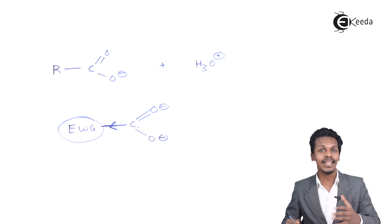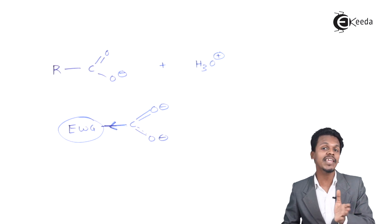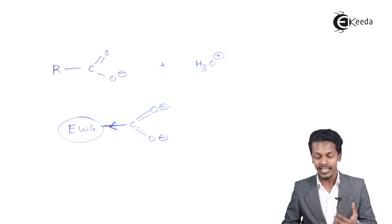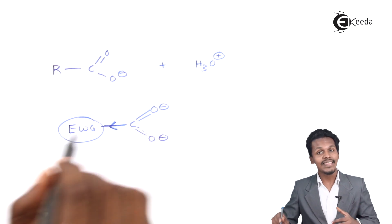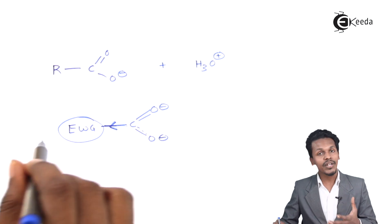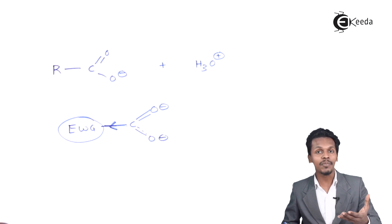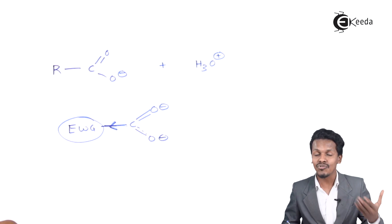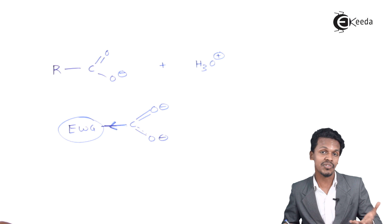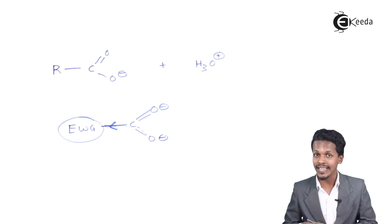By stabilizing the carboxylate ion, the electron withdrawing group helps in removing the H⁺ ion of the carboxylic acid. Thereby, this kind of electron withdrawing group helps to increase the acidic strength of the carboxylic acid.